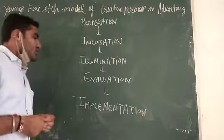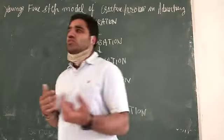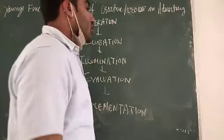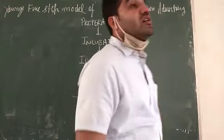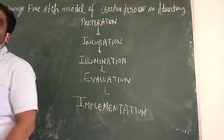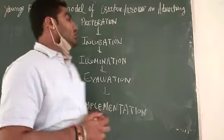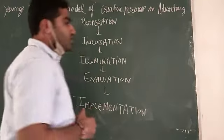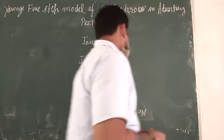Next one is evaluation. Aap jitne bhi alternative ideas construct ho chuke hain, now it is time to evaluate them. We have to find the best idea or solution to the problem. For this you can also consult your peers, your subordinates, your supervisors. So you can consult them and at the end a final product or final solution of the problem is implemented.